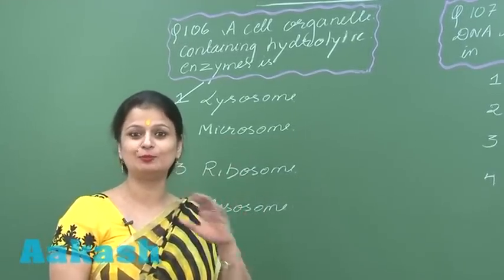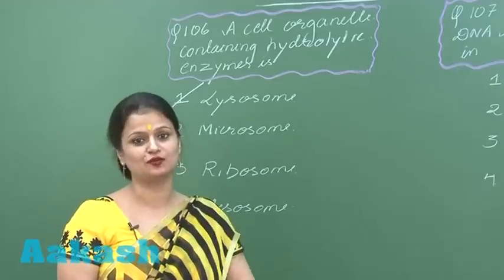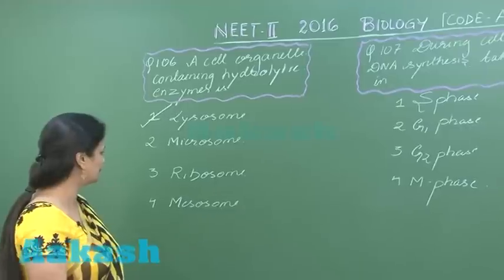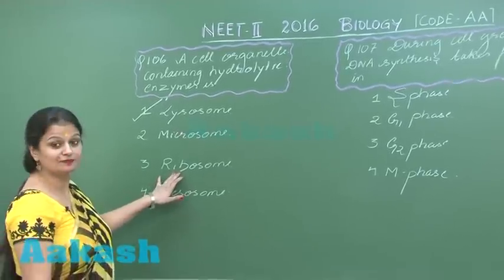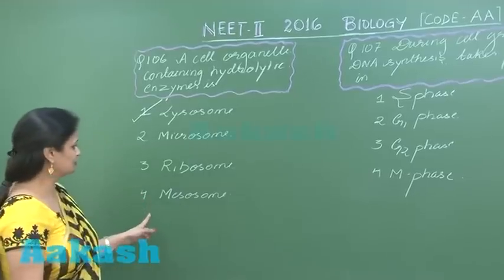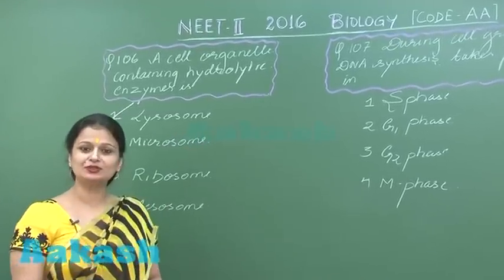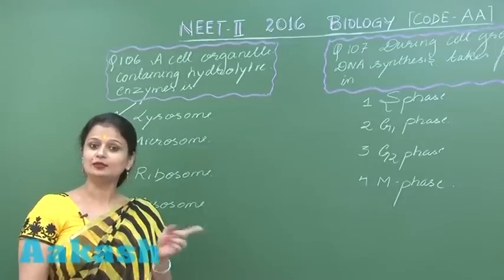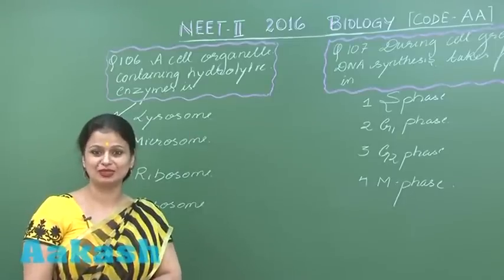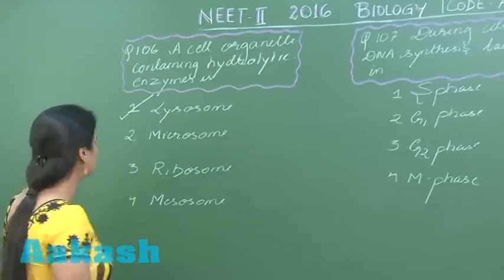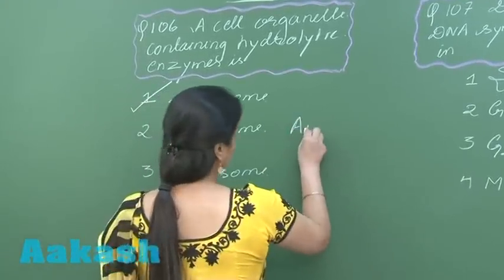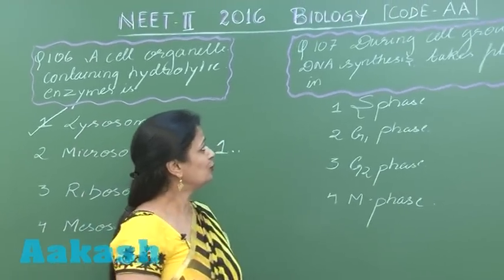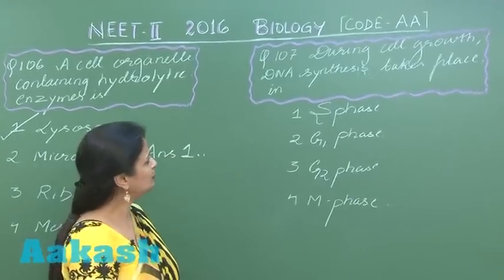Ribosomes are involved in protein synthesis. Mesosomes are structures associated with prokaryotic cells — they represent an ingrowth of the plasma membrane. So the right option with respect to the hydrolytic enzyme-containing organelle is option number one.